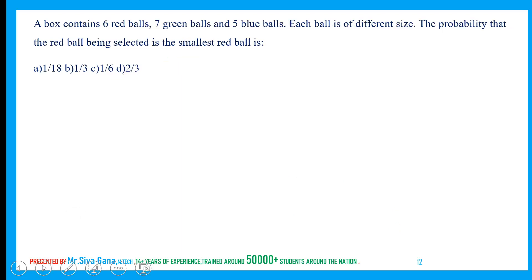A box contains 6 red, 7 green, 5 blue balls. Each ball is different size. The probability that the red ball being selected is the smallest red ball. Definitely only one smallest red ball out of 6. The probability is 1/6. Just think smartly. The smallest ball is only 1, total red balls are 6. Favorable by total, answer over.